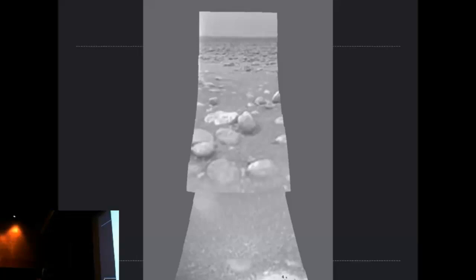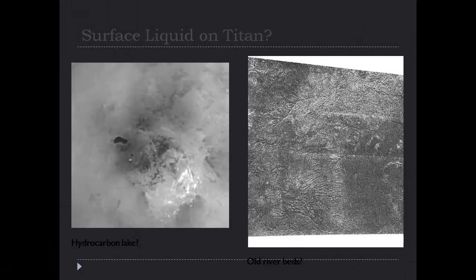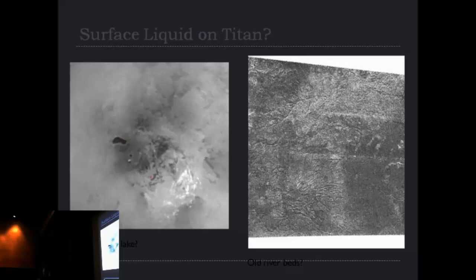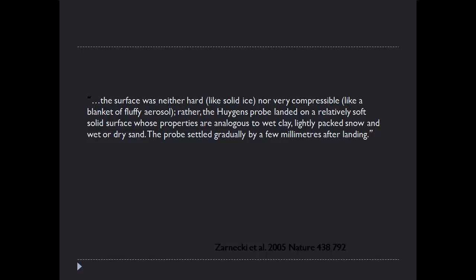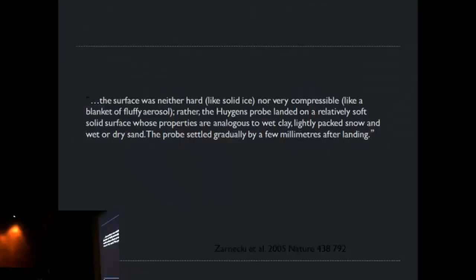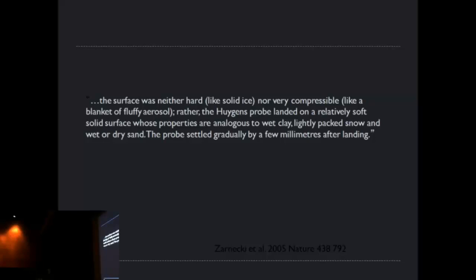Here's a great image of the surface of Titan — a tantalizing taste of what it might be like to rover around. Here's an image showing what looks like a lake, probably ethane or methane, some sort of hydrocarbon. There may be evidence of past rivers on the surface of Titan. The discovery paper noted: 'The surface was neither hard like solid ice nor very compressible like a blanket of fluffy aerosol. Rather, the Huygens probe landed on a relatively soft, solid surface whose properties are analogous to wet clay, lightly packed snow, and wet or dry sand.'